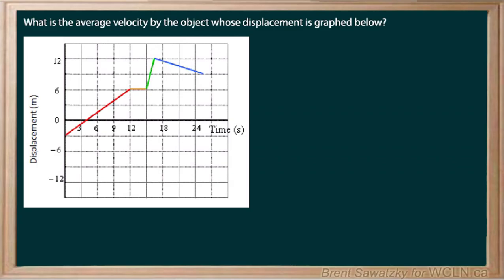This question, we're looking to determine the average velocity by the object where the displacement is graphed here. And so when we see average velocity, we should stop and recall that the average velocity is always the total displacement over that total time.